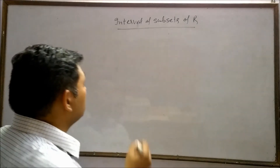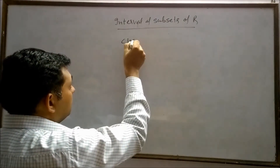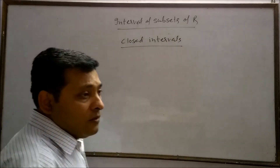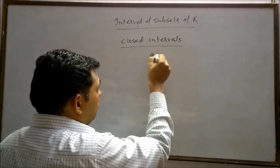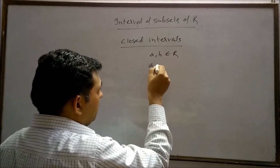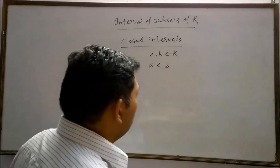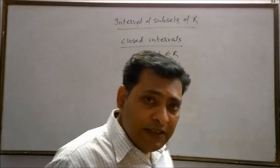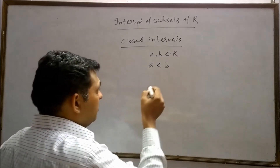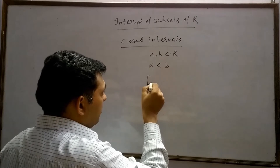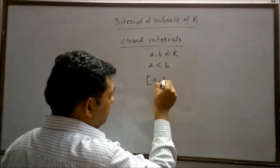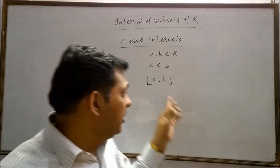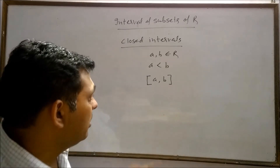The next interval is the closed interval. Let there be two numbers a and b belonging to the real numbers, with a smaller than b. Now we want to take a set which contains all real numbers lying between a and b, as well as a and b themselves. This is represented using the closed interval notation [a, b], which means all numbers between a and b, including a and b, are included in this interval.